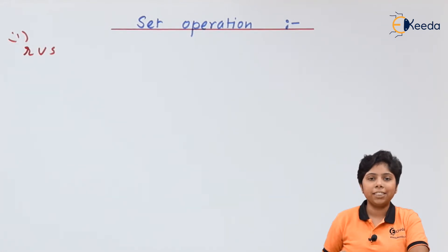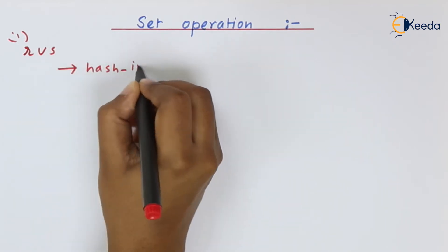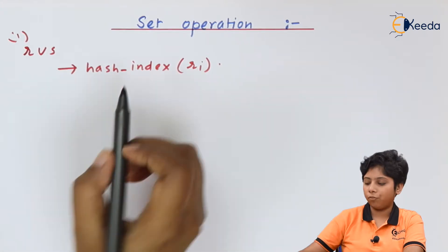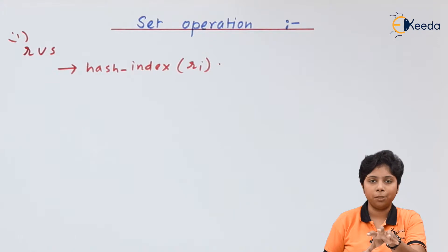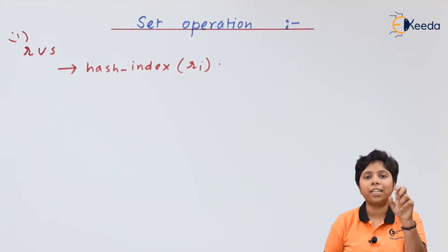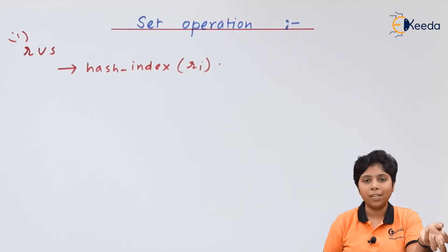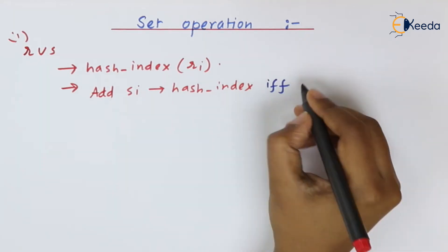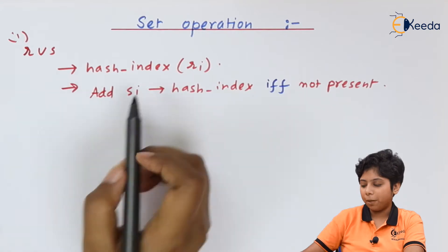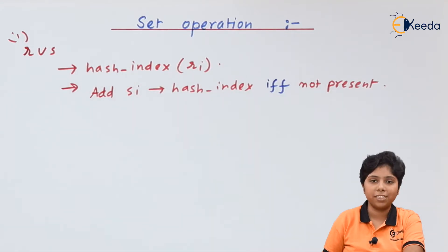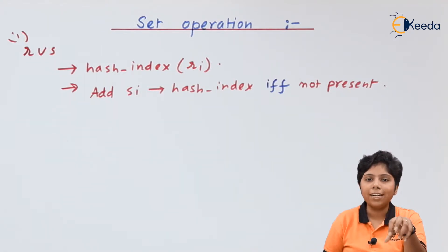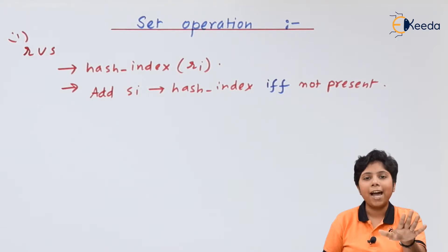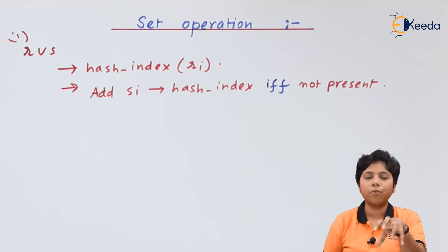We first need to build a hash index on these tuples. For r union s, we build the hash index on r as it is the build input. Then we probe the s input to check if any tuple belongs to both ri and si, and add that result to the hash index. We add every tuple from s to the hash index only if it is not already present, finding common matches and excluding them, then adding all tuples not present in s to the result.